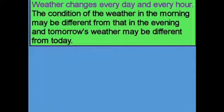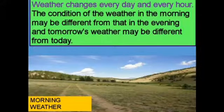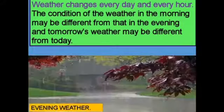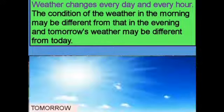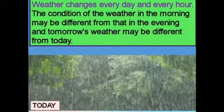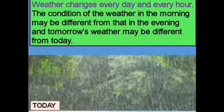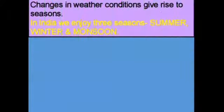The weather of a place changes every day and every hour. The condition of the weather in the morning may be different from that in the evening, and tomorrow's weather may be different from today. Changes in weather conditions give rise to seasons.